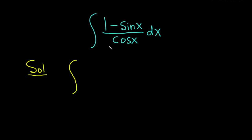This is the integral of 1 over cosine x, and then we have minus sine x over cosine x, with a dx.